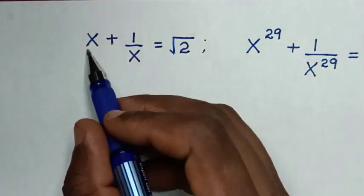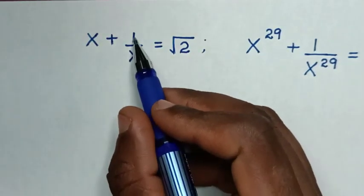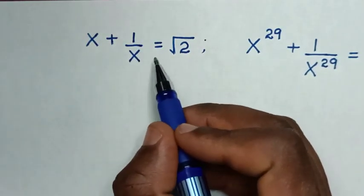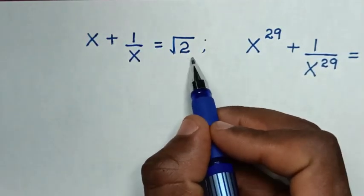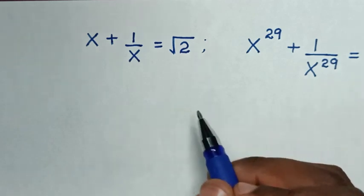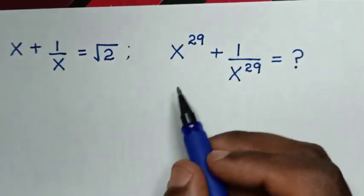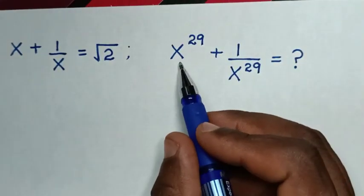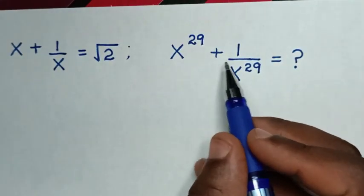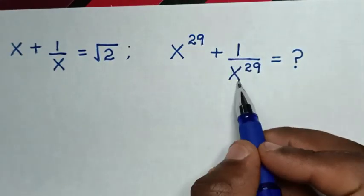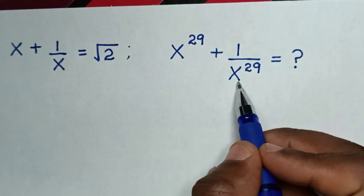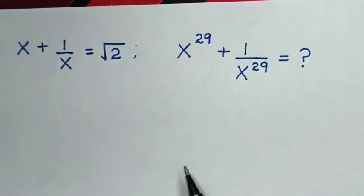Hello. How to solve x plus 1 over x is equal to square root of 2, to find the value of x power of 29 plus 1 over x power of 29.